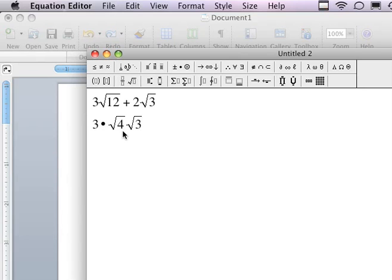So I broke this up into the square root of 4 times the square root of 3. That makes sense, because after I simplify the square root of 4, I'll be able to add this square root of 3 to this square root of 3.